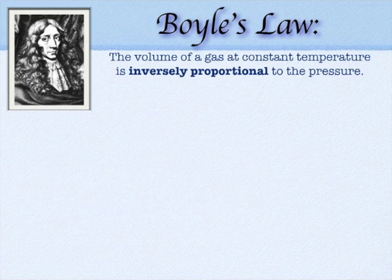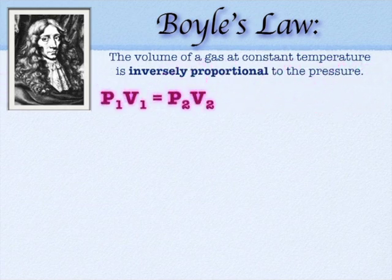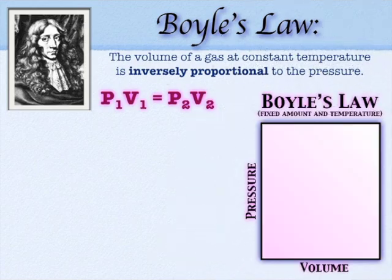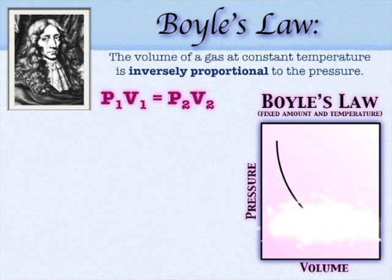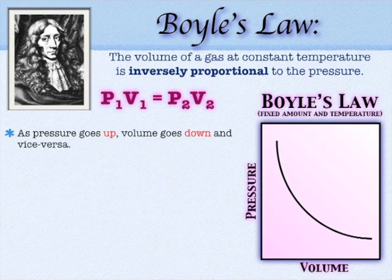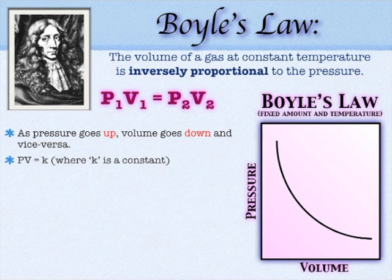That's the idea that the volume of a gas is inversely proportional to the pressure. As the pressure goes up, the volume goes down; as the volume goes down, the pressure goes up. Pretty simple idea. You get the equation P1V1 equals P2V2, where 1 and 2 represent different conditions. Boyle's Law is really used for changing conditions. You can also think of it as P times V equals a constant, and that helps you understand the math.